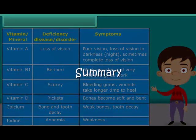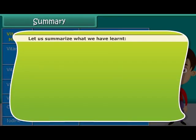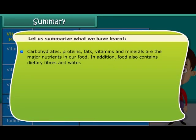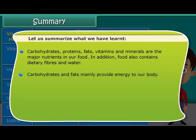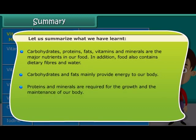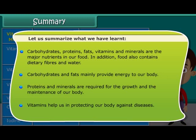Summary. Let us summarize what we have learned. Carbohydrates, proteins, fats, vitamins and minerals are the major nutrients in our food. In addition, food also contains dietary fibers and water. Carbohydrates and fats mainly provide energy to our body. Proteins and minerals are required for the growth and the maintenance of our body. Vitamins help us in protecting our body against diseases.